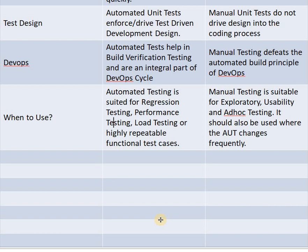Next parameter is when to use. Automation testing is suited for regression testing, performance testing, load testing, or highly repeatable functional test cases. Manual testing is suitable for exploratory, usability, and ad-hoc testing, and should also be used where the application under test changes frequently.